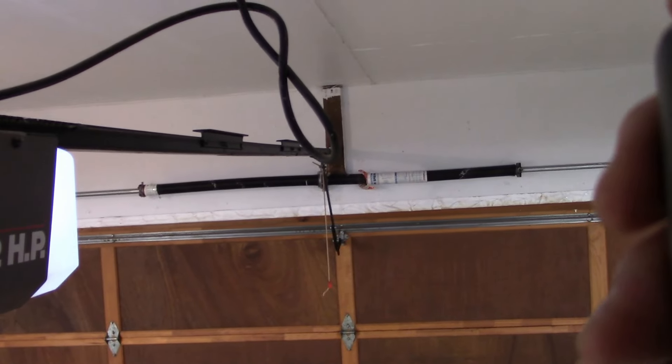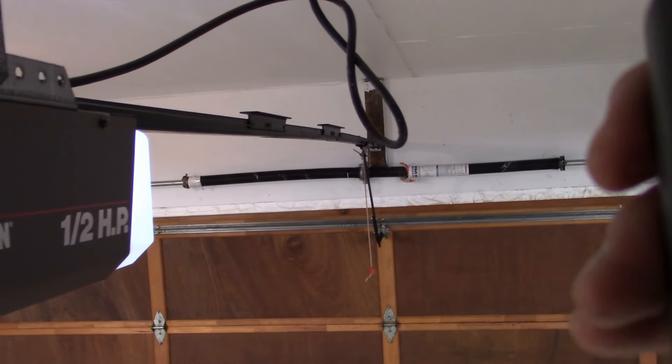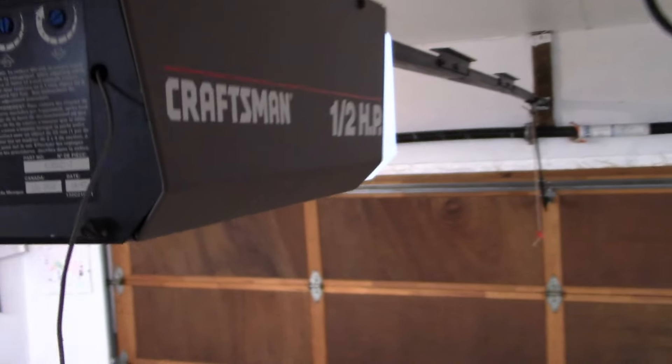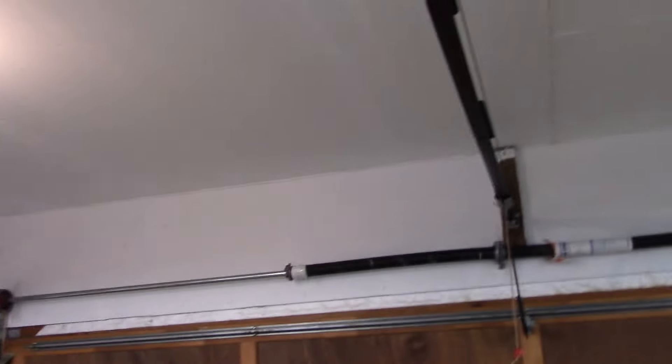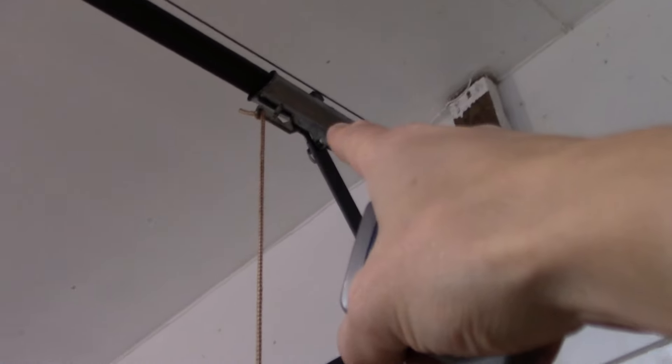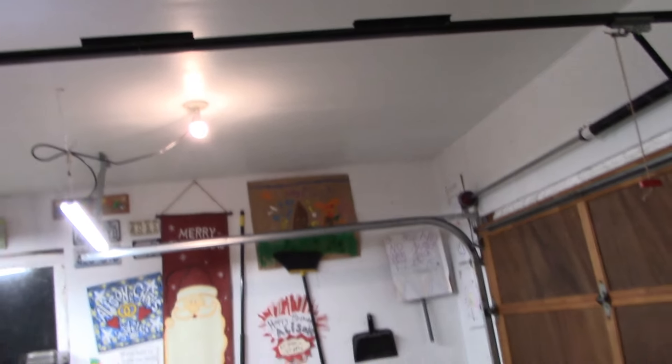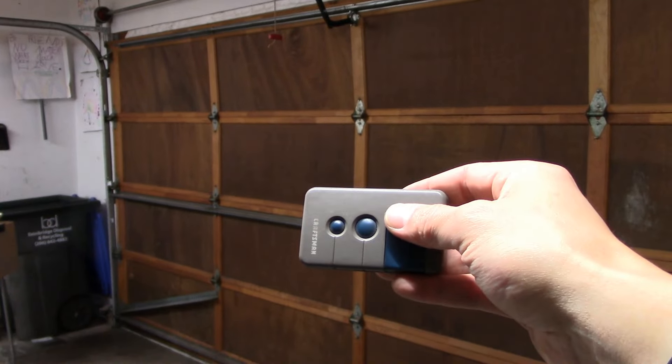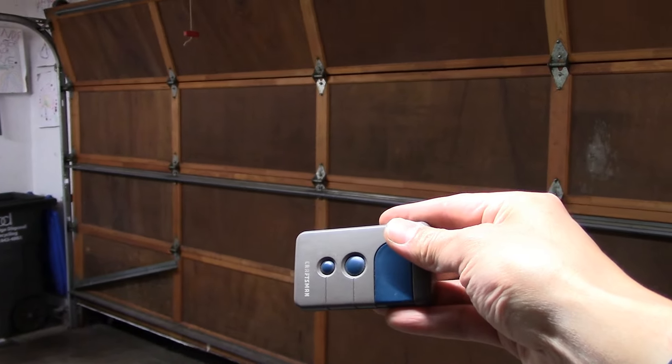All right, here we go. Three, two, one—success! Okay, they're good. It clipped in to the rail, clipped into the actual arm for the garage door. So now let's see if this is going to work to actually lift the garage door without exploding.